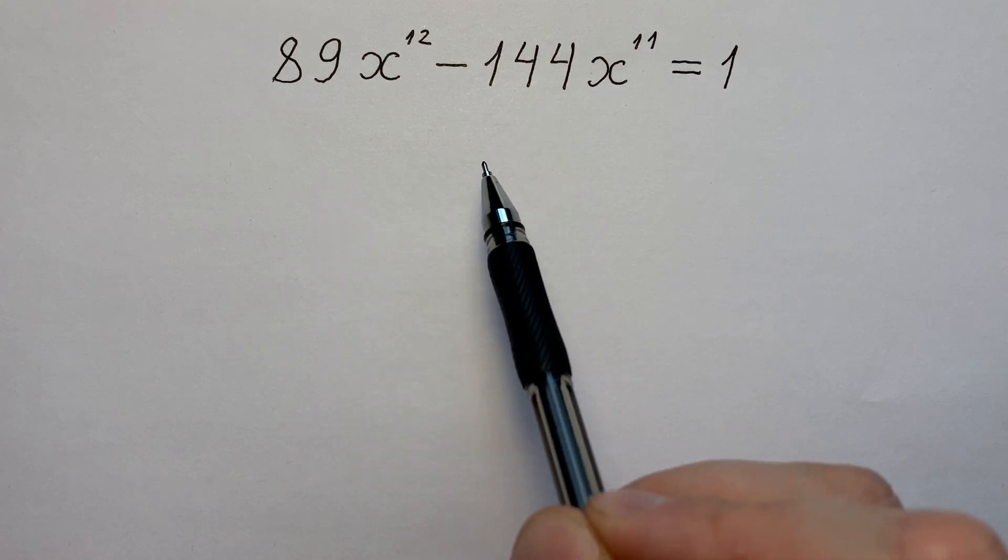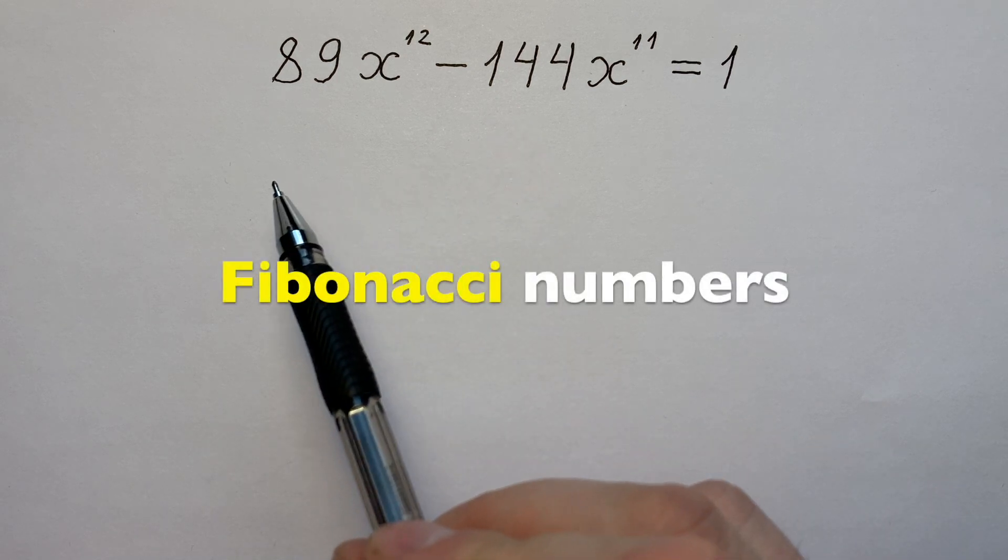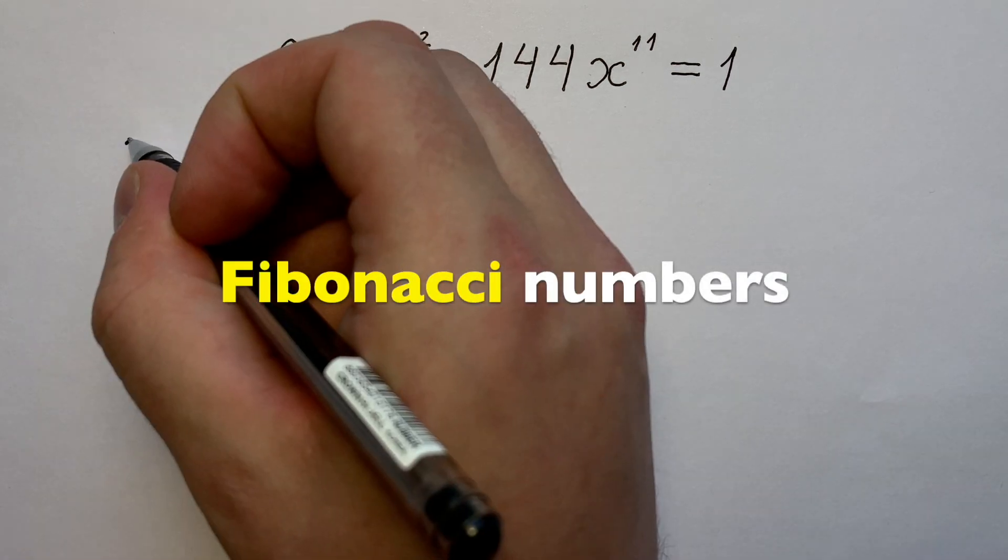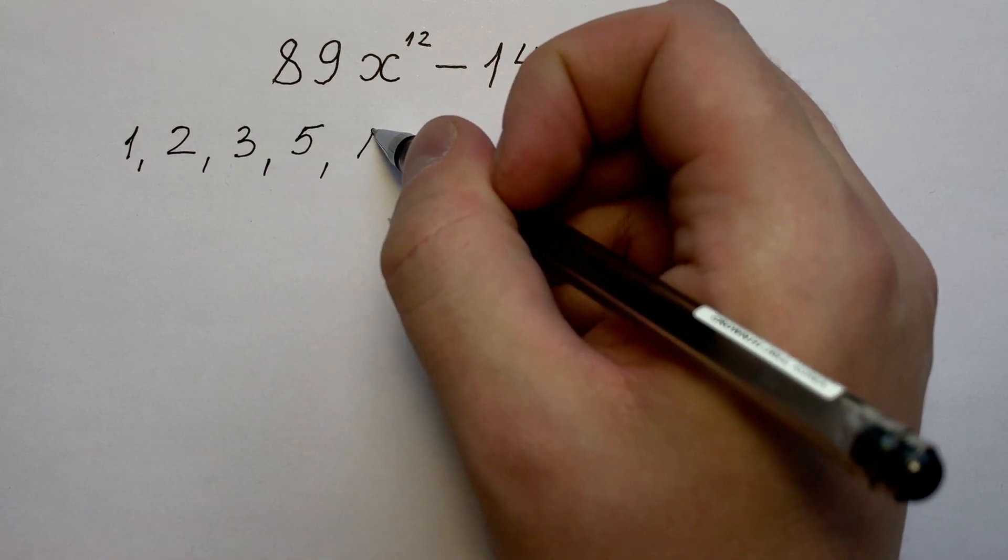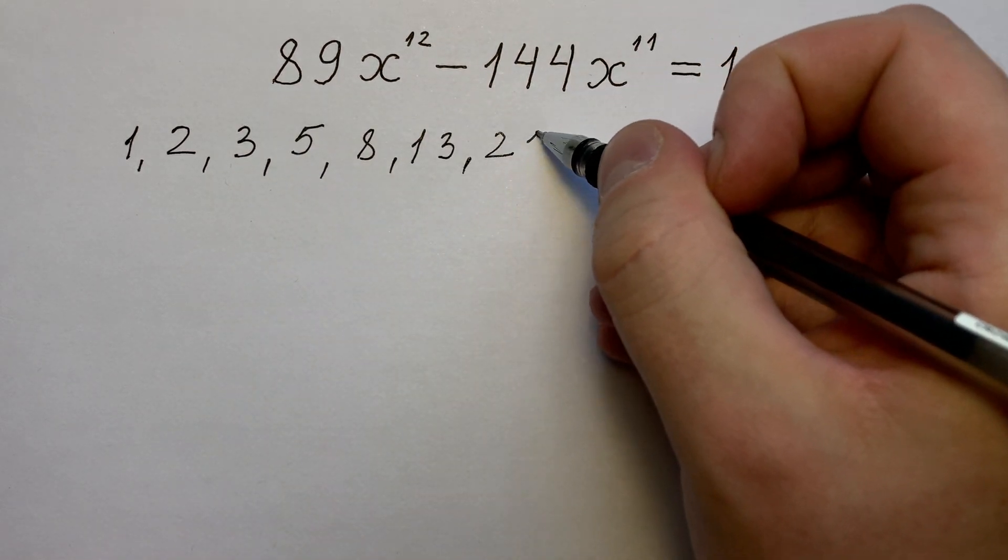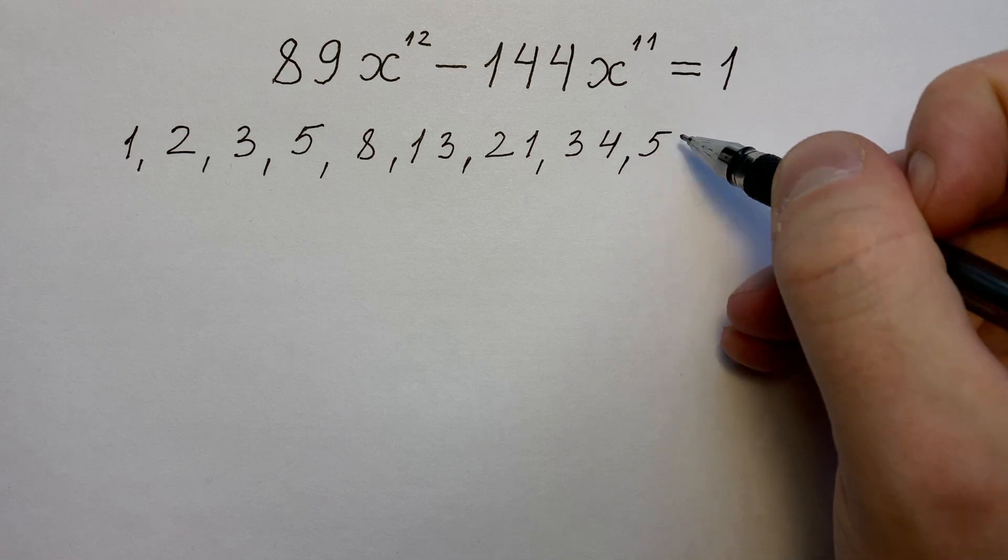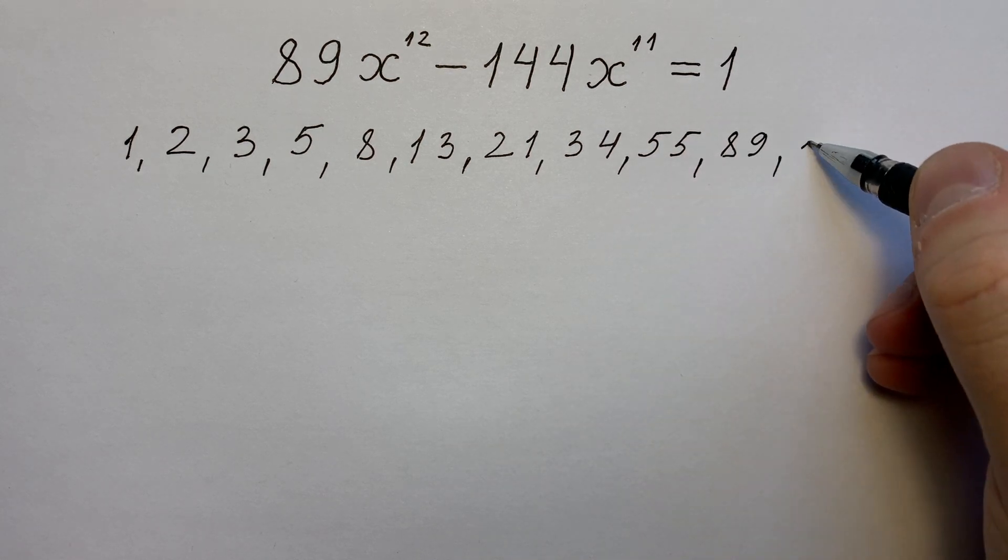Of course, experts know that these two numbers are Fibonacci numbers. Like 1, 2, 3, 5, 8, 13, 21, 34, 55, 89, and 144.